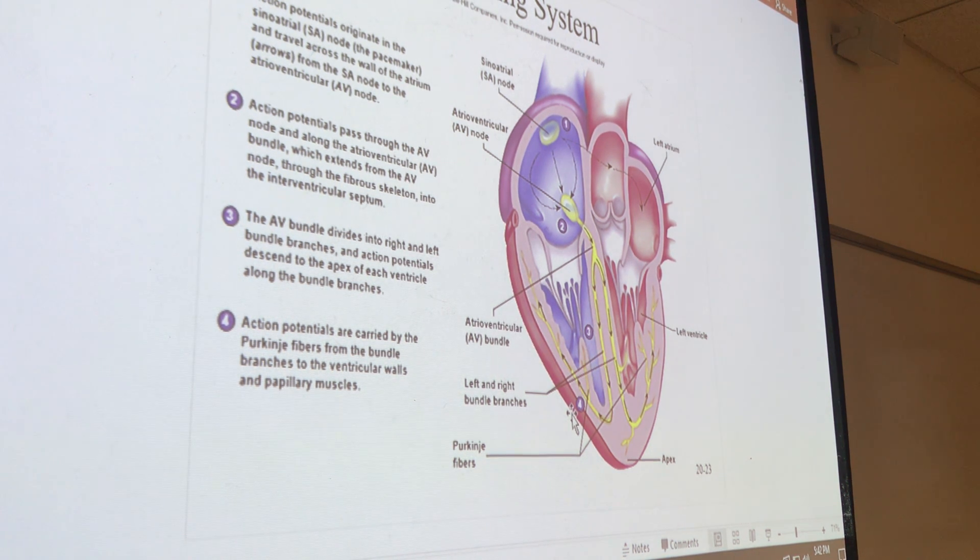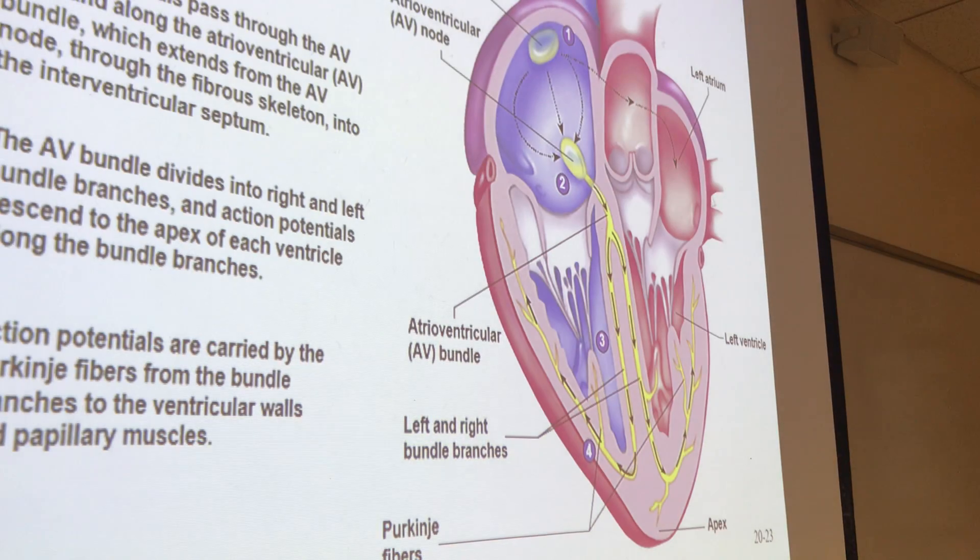So you have to disconnect those. How? By that fibrous skeleton. You have this cardiac conduction system that allows us to have a way of triggering when these atria contract, delaying the signal, allowing the atria to contract and then relax. Blood goes from the atria to the ventricles. Once that happens, then we stimulate the ventricles. So there's a slight delay.